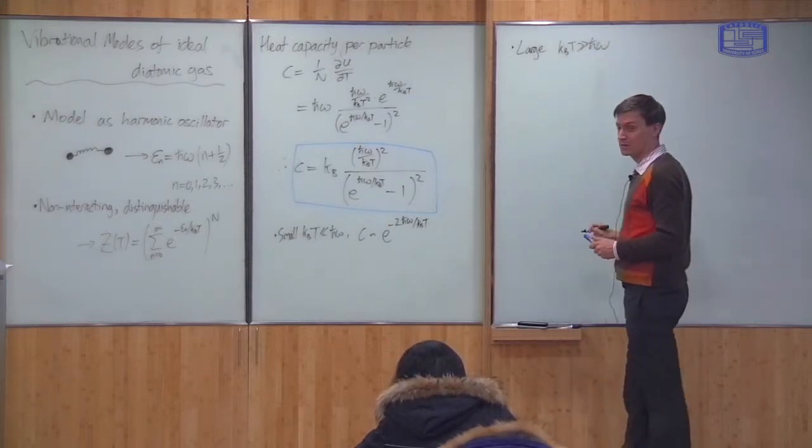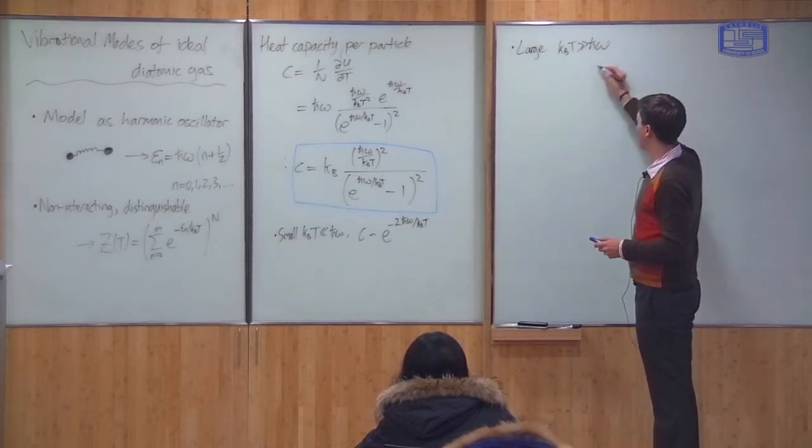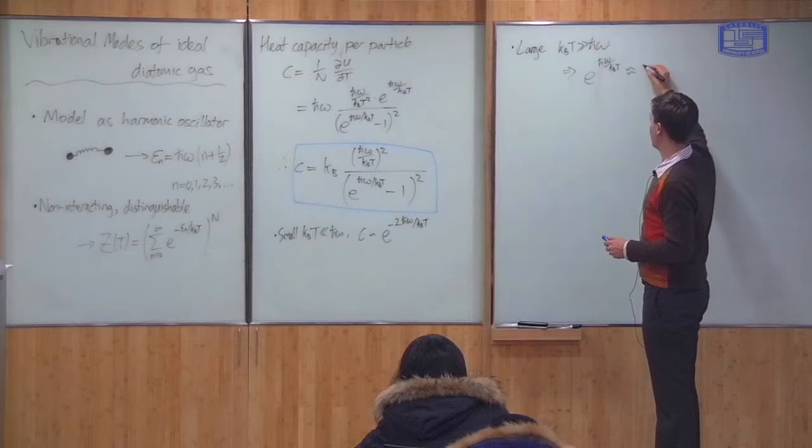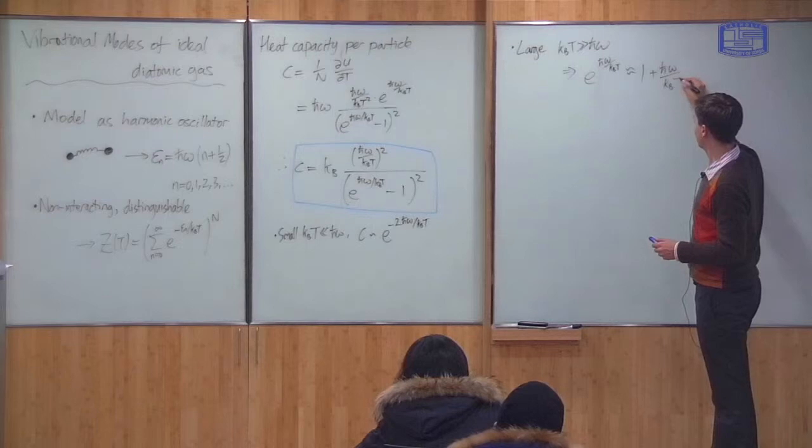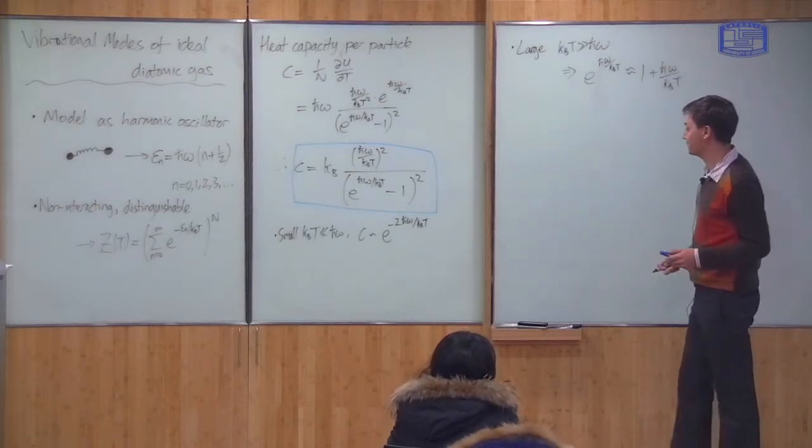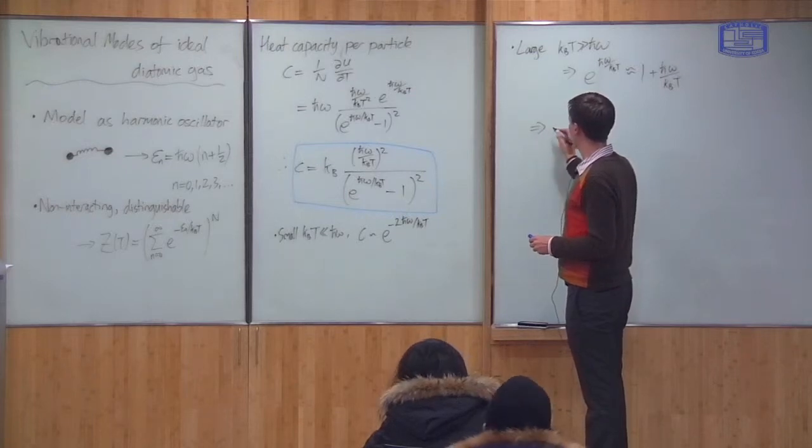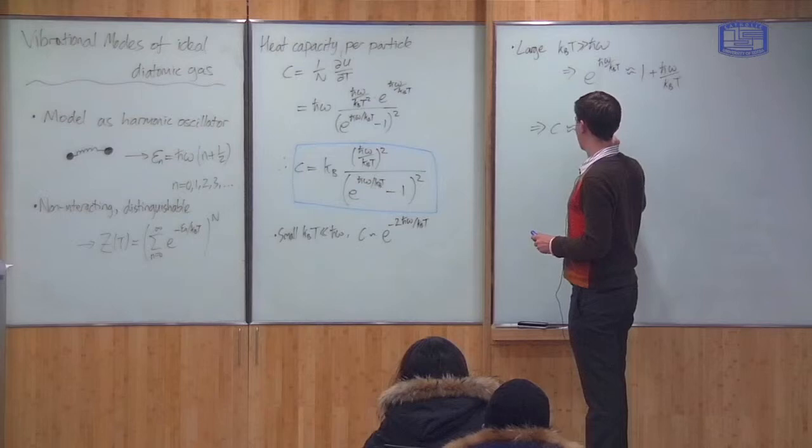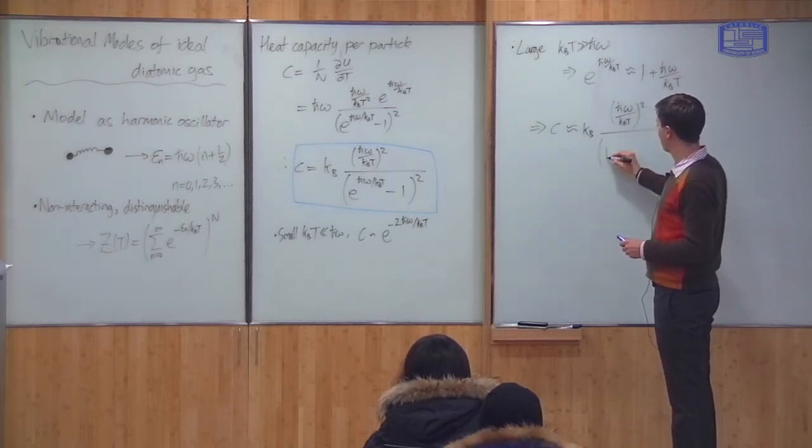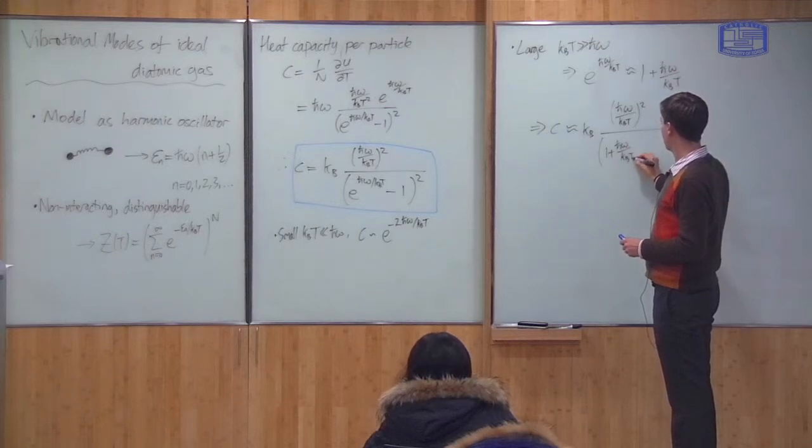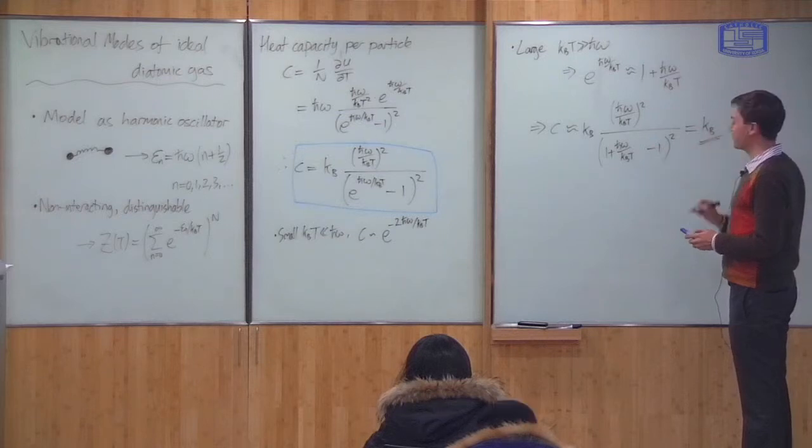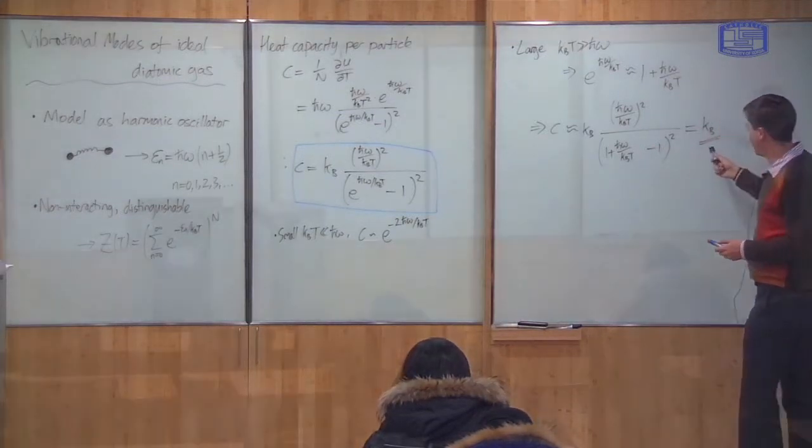We can also look at the opposite limit. k_B T is much greater than h-bar omega. And this means h-bar omega over k_B T is a small number. And in particular, this means we can approximate the exponential approximately equal to 1 plus h-bar omega/k_B T. We can approximate the exponential like this. This is just a first-order Taylor expansion. And if this is true, then C_V takes a very simple form. You see that the top and bottom are exactly the same, so they cancel. And this just gives you that heat capacity is equal to the Boltzmann constant. And this is the prediction of the equipartition theorem.